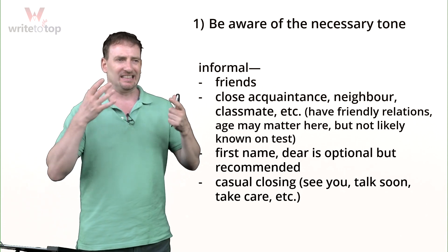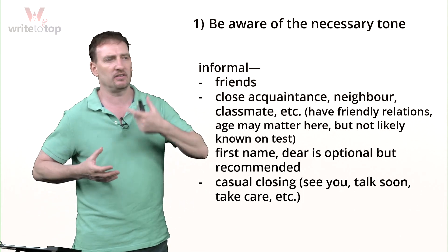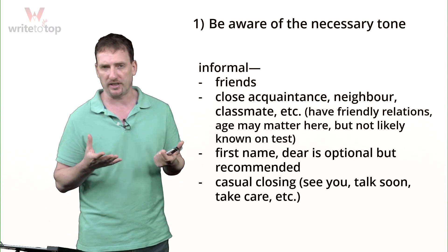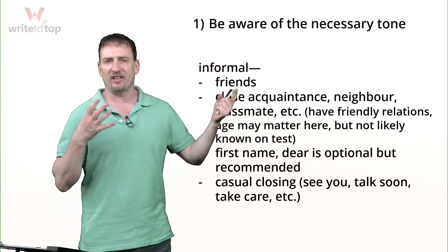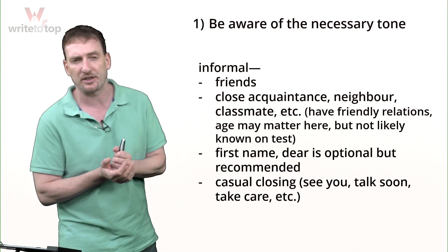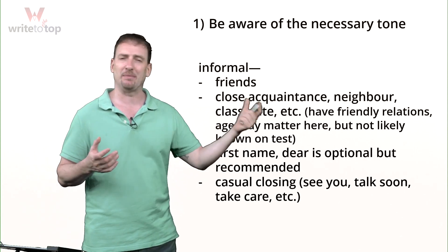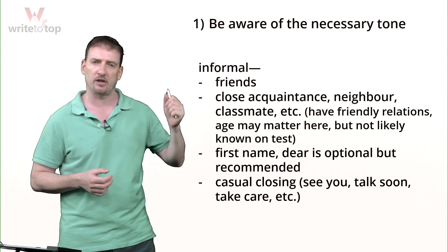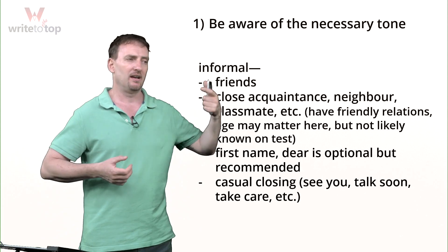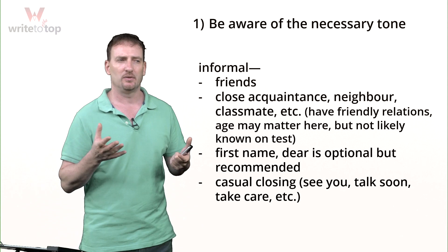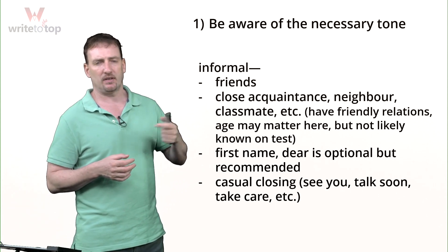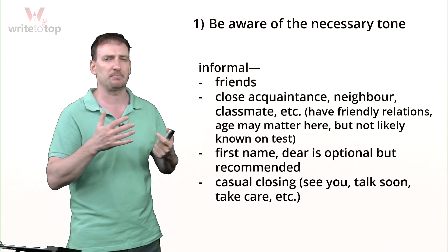When writing an informal letter, nine out of ten times this will be to your friend — someone you know, are very friendly with, and have a casual relationship with. First name only. You can also have a very close acquaintance — not friends exactly, but comfortable enough that you don't have to be formal. Your neighbor, for example: you see them every day, you say good morning, things like that. A classmate is also typically an informal situation, though age may matter — if a classmate is much older you may need to be a little more respectful, making it semi-formal.